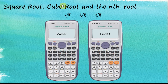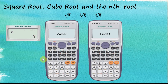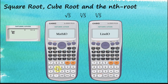Now for roots — square root, cube root, and nth root. For example, the square root, cube root, and 6th root. For Math input/output, the square root is easy: press the square root button, then 5, and equal. The answer is given in root form — normally we want it in decimal, so use this button to convert the answer to a decimal number.